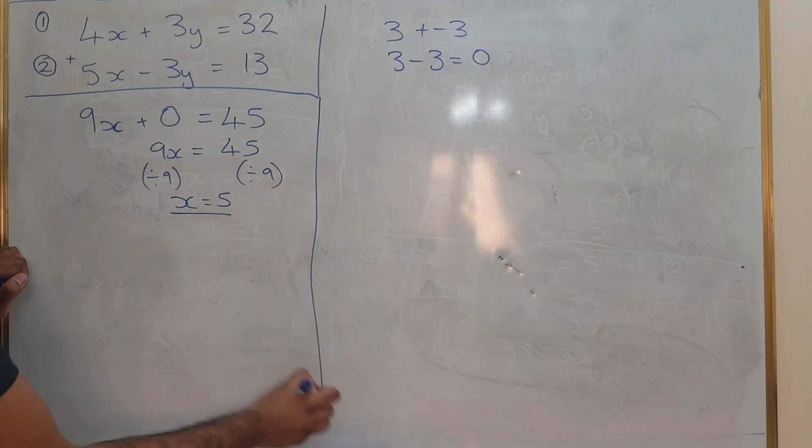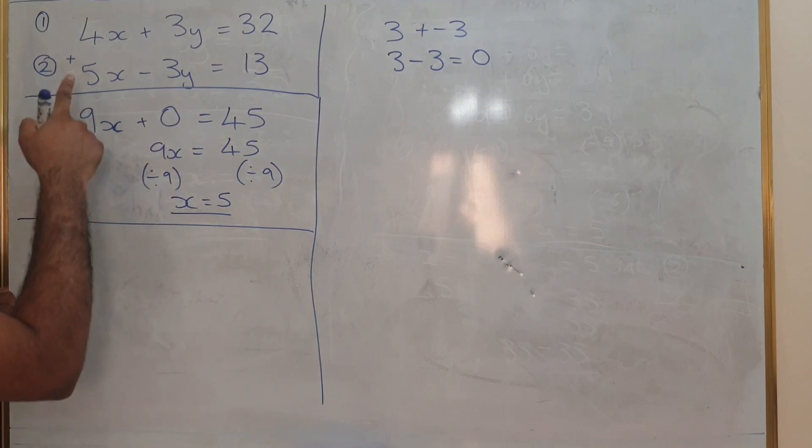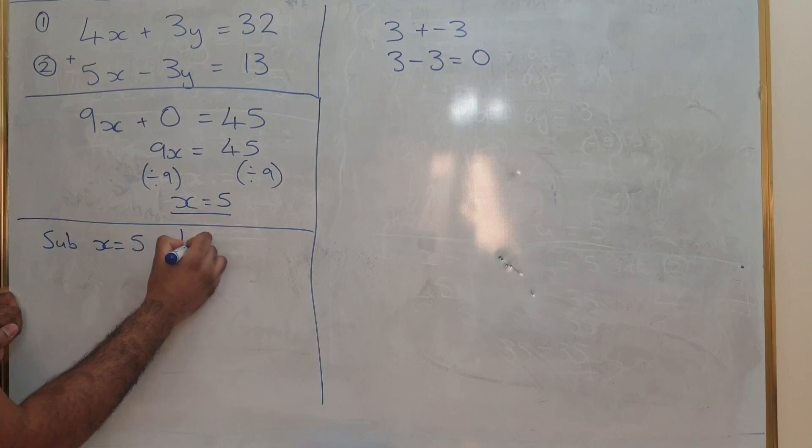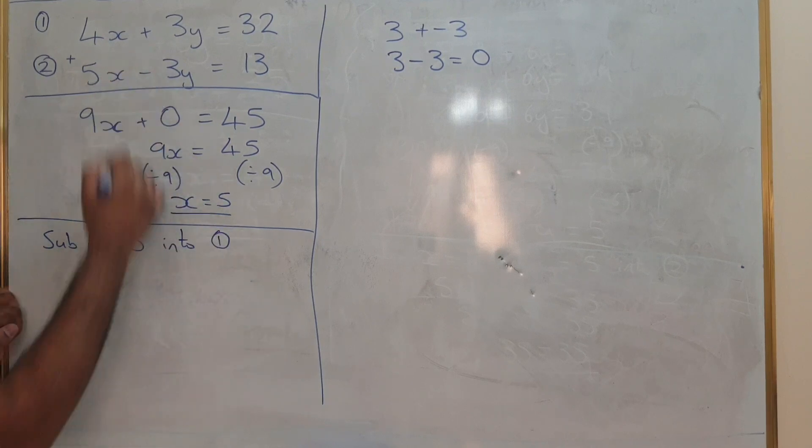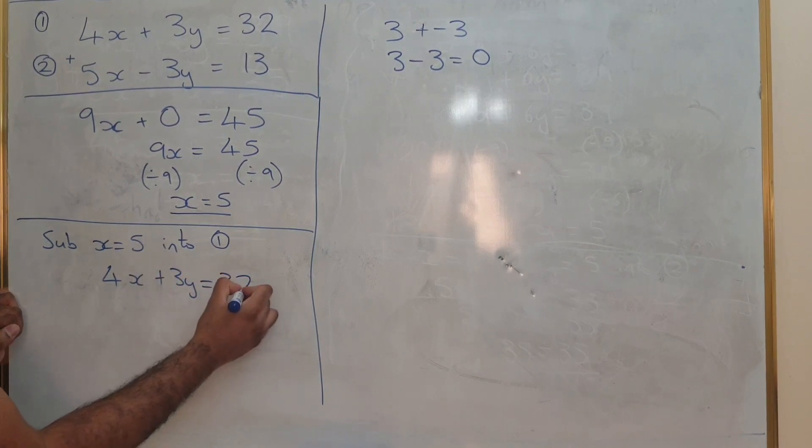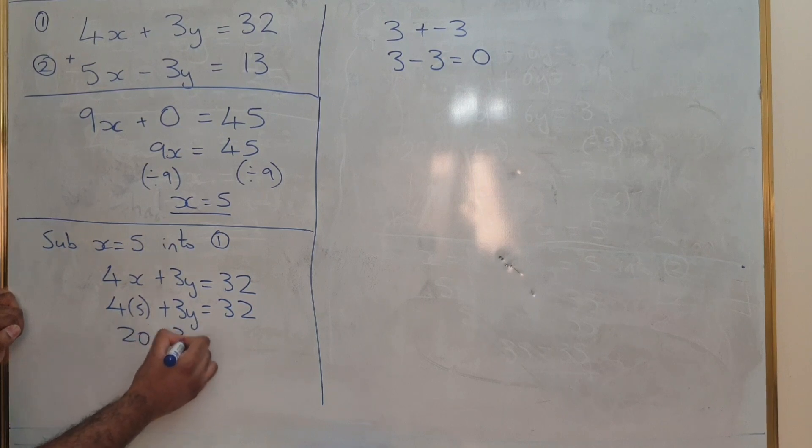Once we've got x equals 5, we can sub that in. So substitute that into equation 1. So sub x equals 5 into 1. So 4x plus 3y equals 32. That's going to be 4 times by 5 plus 3y equals 32. That's 20 plus 3y equals 32.